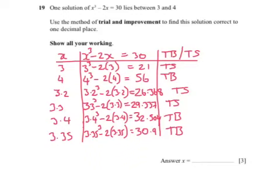Substituting 3 gives us an answer of 21. That is too small because it should be 30 or as close as possible to 30. Then we try 4, which is too big because it gives us an answer of 56.